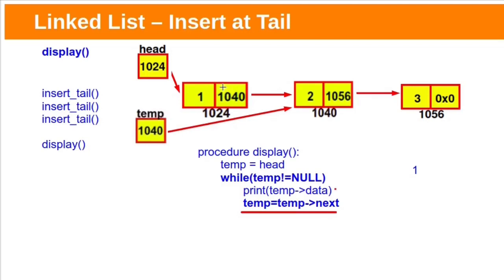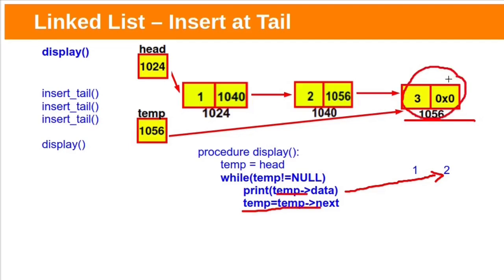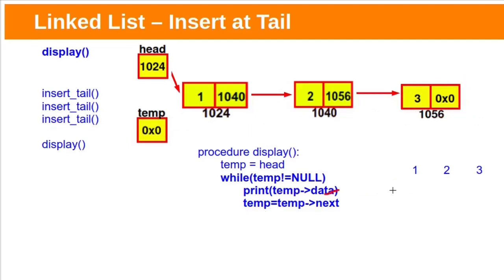For the first node, temp is not null, so its content will be printed — so 1 will be printed. Then temp will be pointing to the next node. Here again temp is not equal to null, so print the temp data — it will print 2. Then advance the temp pointer. Now temp will be pointing to the last node. Here also temp is not equal to null, so print the temp data — it will print 3.